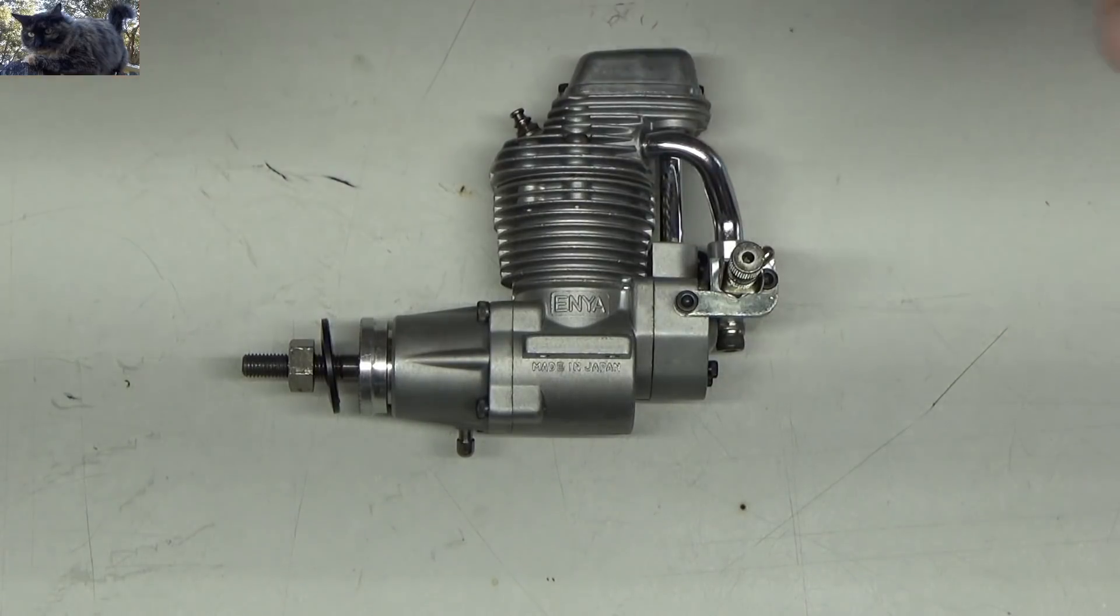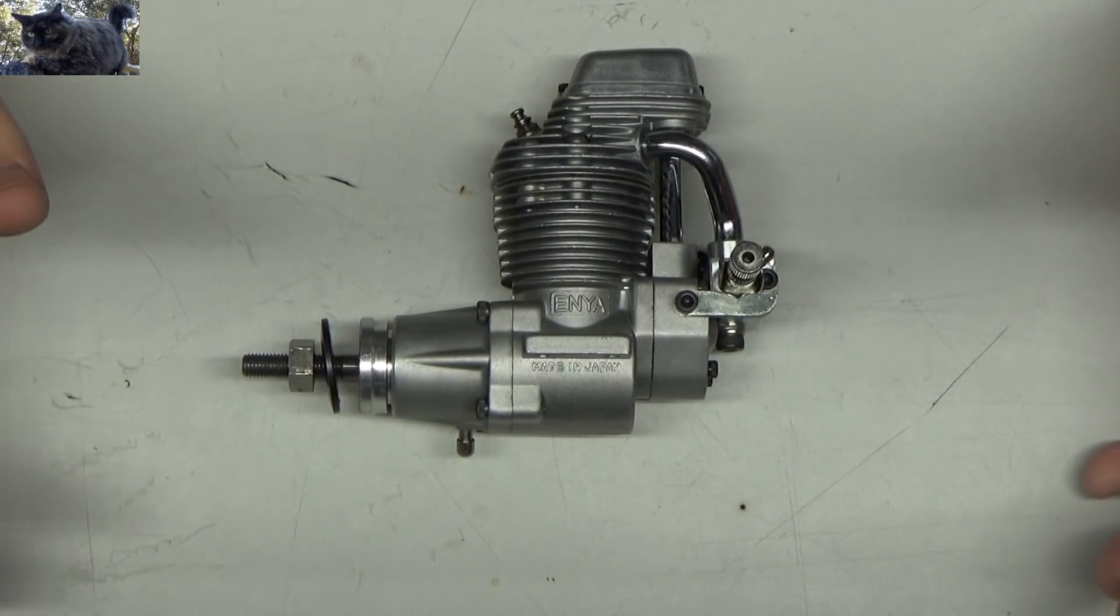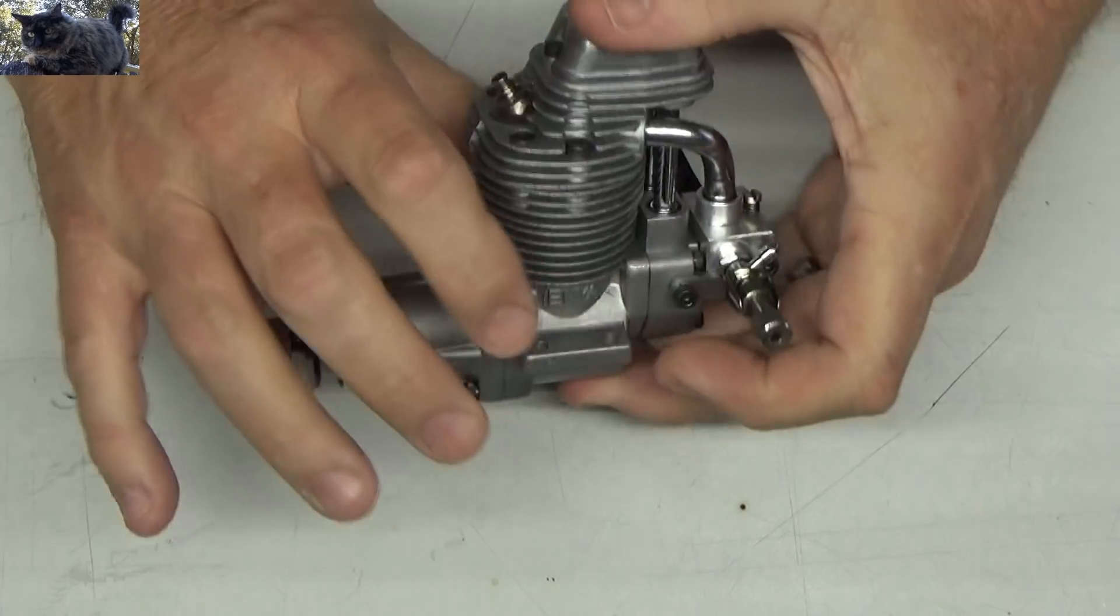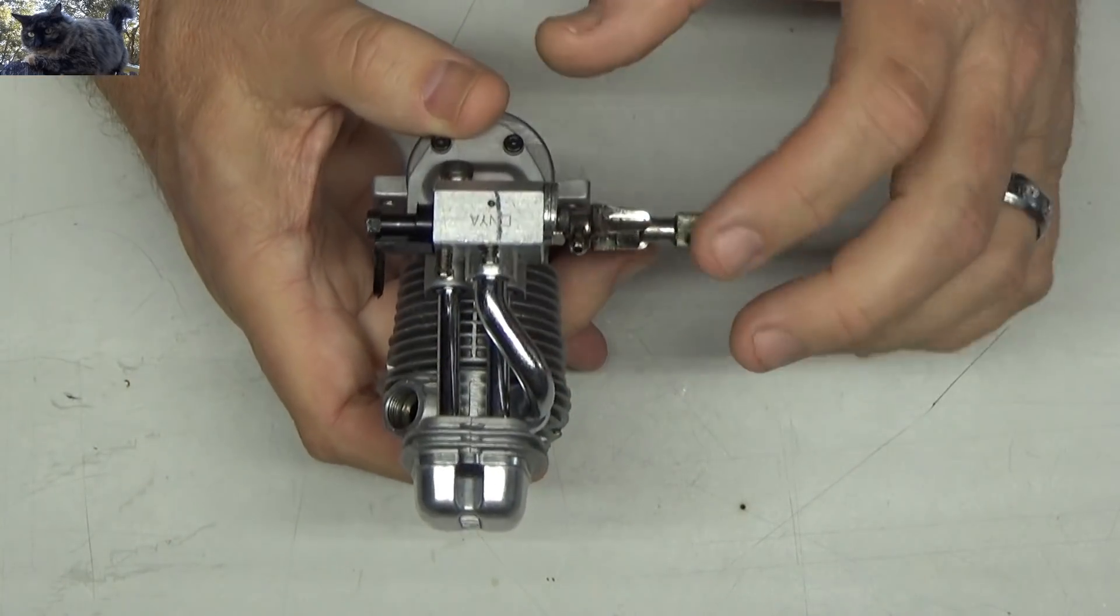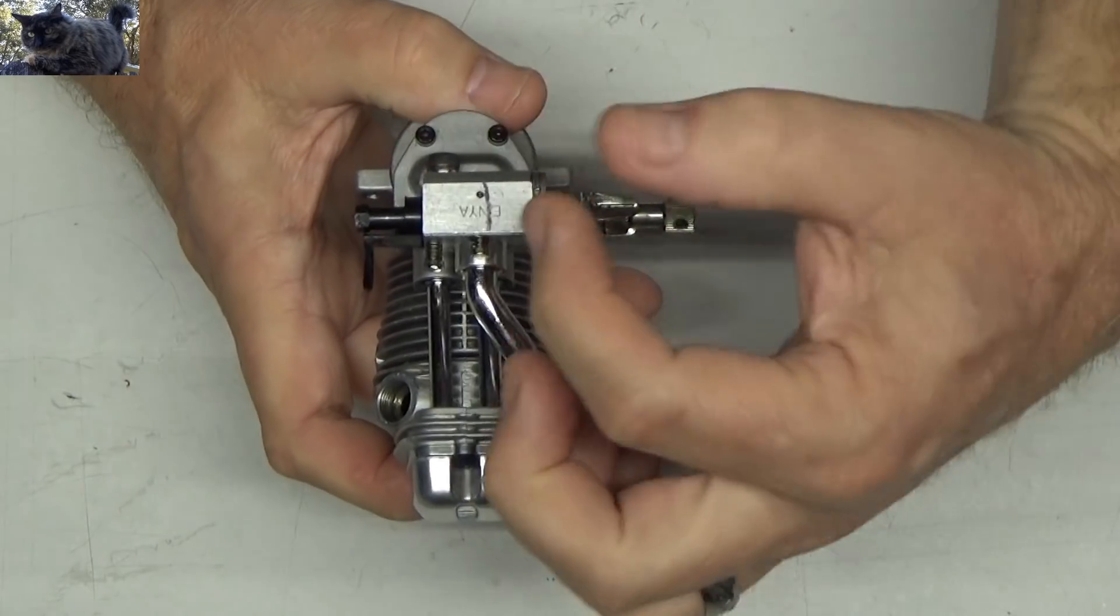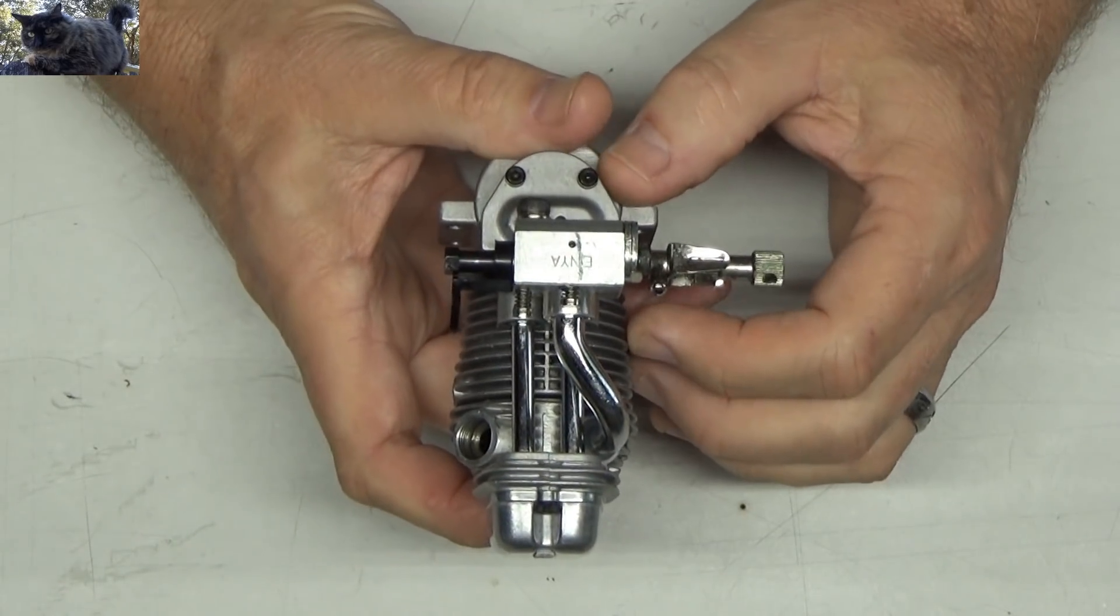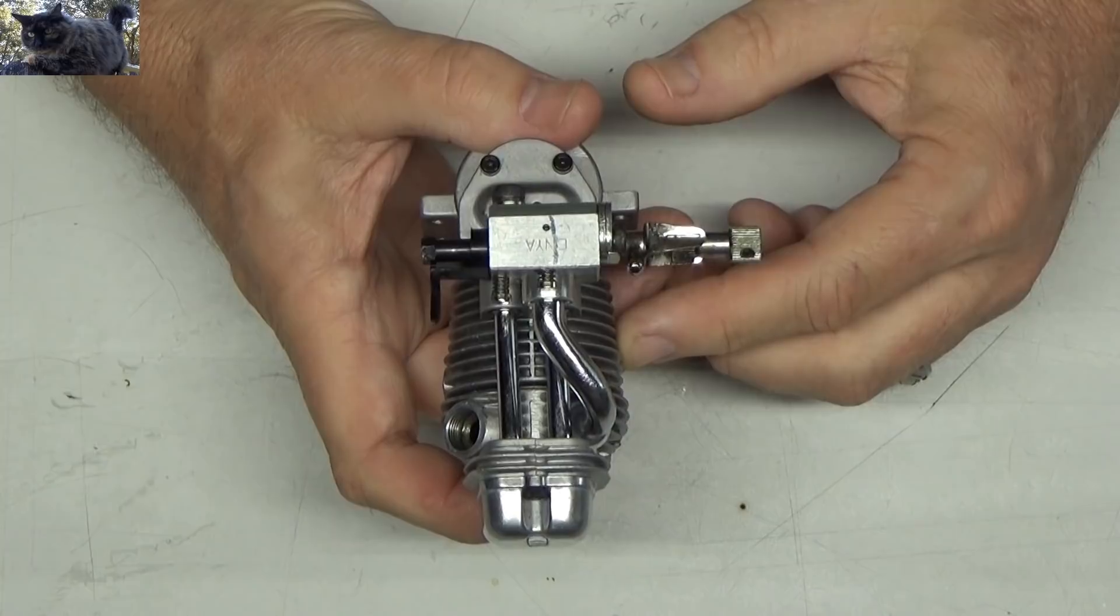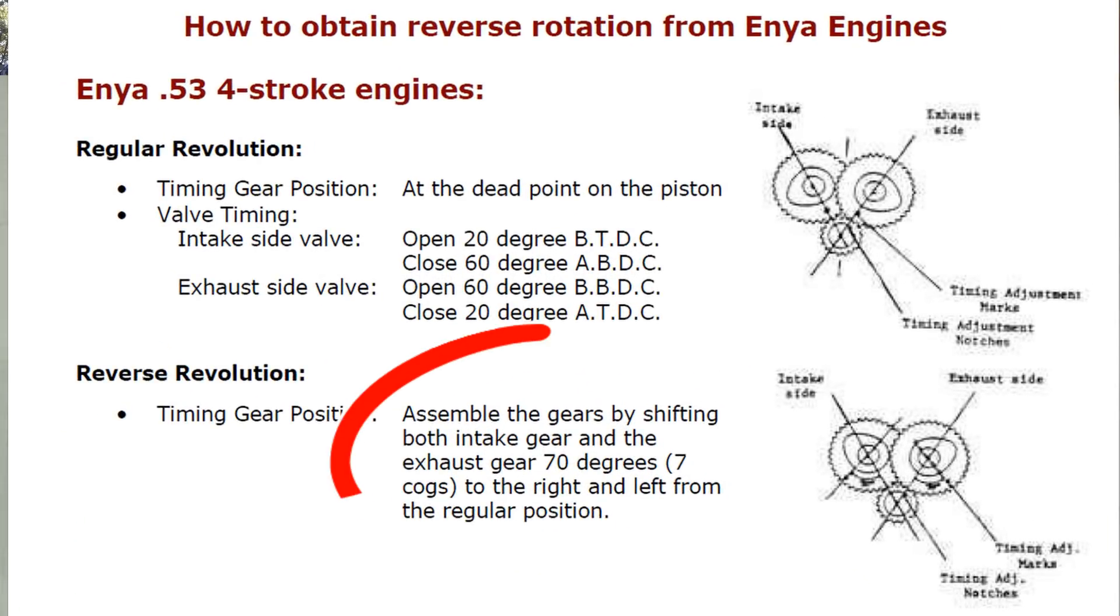I haven't done it before, but I have a PDF. If you search Google for Enya reverse rotation guide, you'll probably come up with a PDF yourself. It's very simple to do. All it requires is removal of the carb and timing gear cover, and you just simply rotate the timing gears to slightly different locations. It basically just says you rotate them seven cogs. You rotate them seven cogs either direction and boom, you're done.